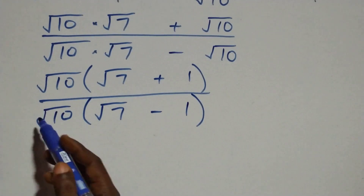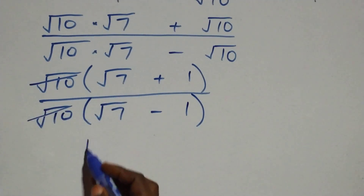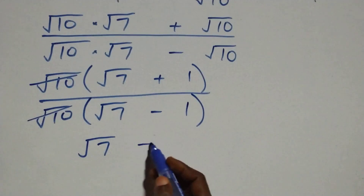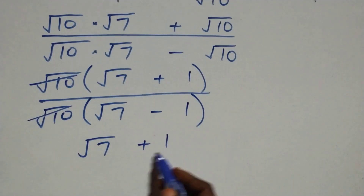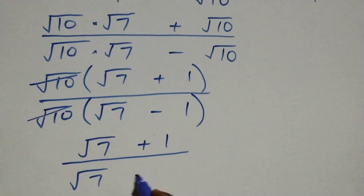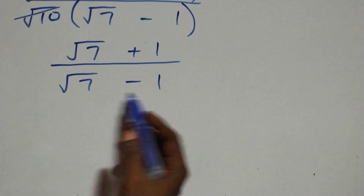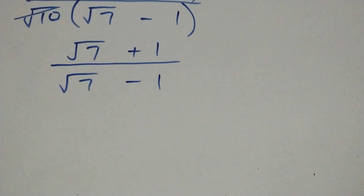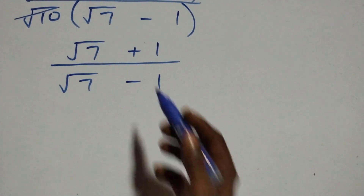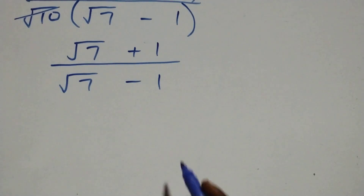The root tens cancel each other, and we are left with root seven plus one divided by root seven minus one.